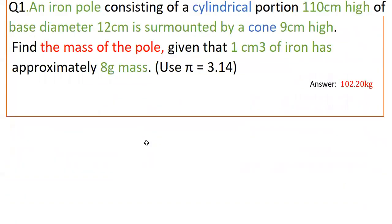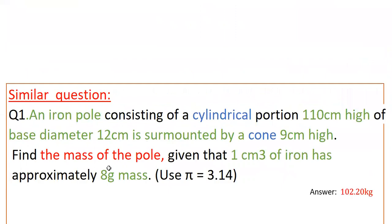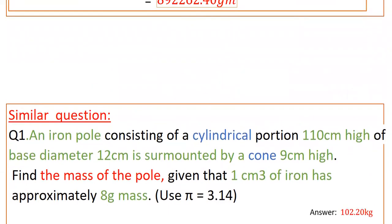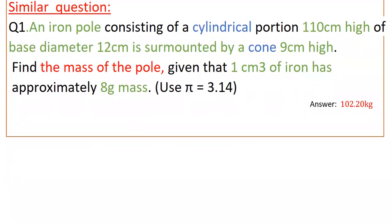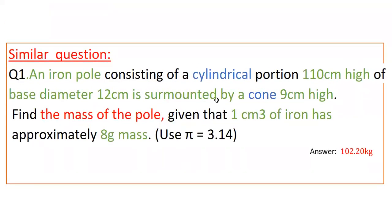Now please do this similar question. Here the iron pole consists of cylinder and cone, different shapes. The diameter is same for both shapes, so you take diameter as 12 centimeters, so radius is 6 centimeters for cone as well as cylinder.